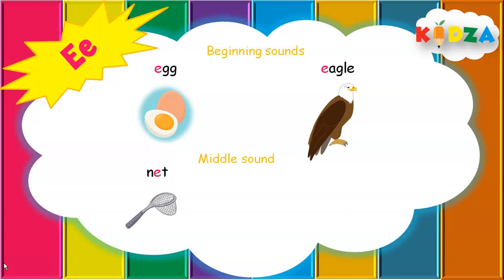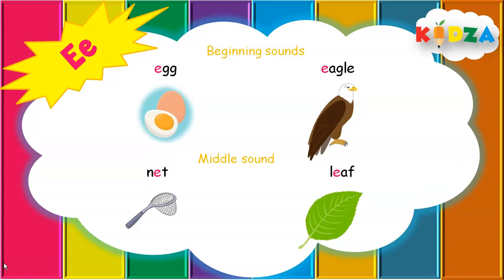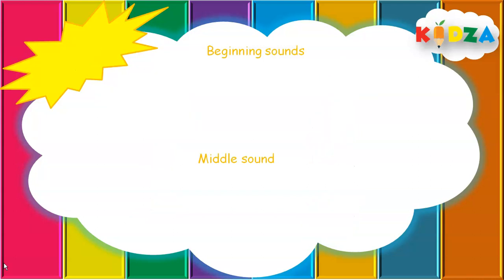Middle sound of E: N-E-T, Net. Short sound E. Long sound E — L-E-A-F, Leaf. The next letter is I.